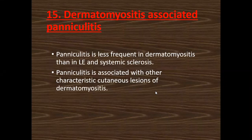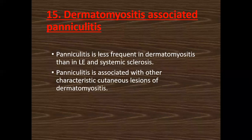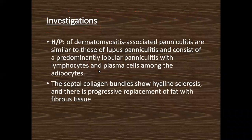Another autoimmune paniculitis is dermatomyositis-associated paniculitis, which is less frequent than in lupus erythematosus and systemic sclerosis. Paniculitis is associated with other characteristic cutaneous findings of dermatomyositis. Histopathologically, the findings are similar to lupus paniculitis — interface change and dense lymphocytic infiltrate, perivascular and in the fat lobule.